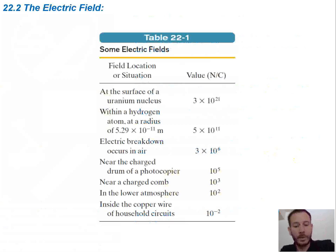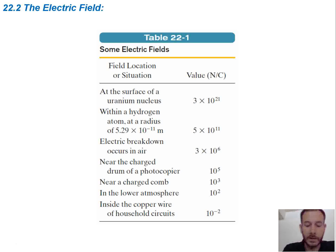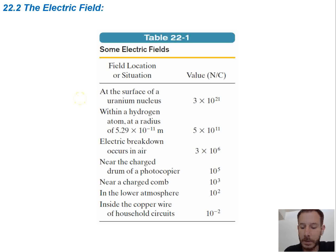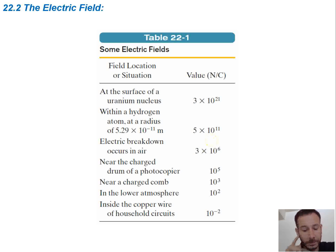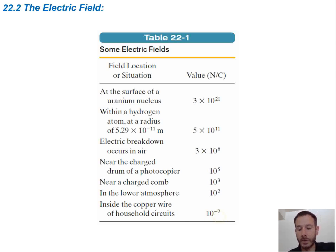Here's a table of some common electric fields to give a sense of magnitudes. The electric field at the surface of a uranium nucleus would be 3 times 10 to the 21st — quite a large number. Inside a hydrogen atom, it's to the 11th power. Near the charge drum of a photocopier, to the 5th power. Inside the copper wire of household circuits, it's 10 to the negative 2. So there's quite a large range of electric fields.